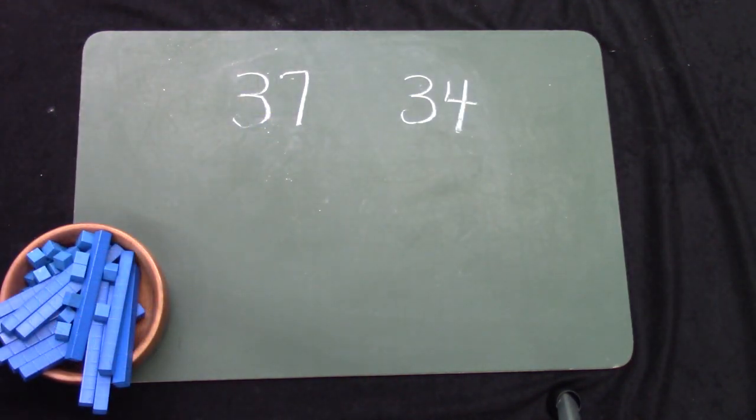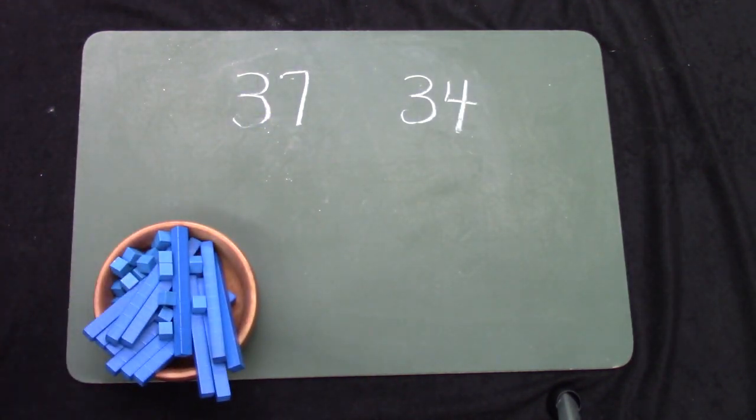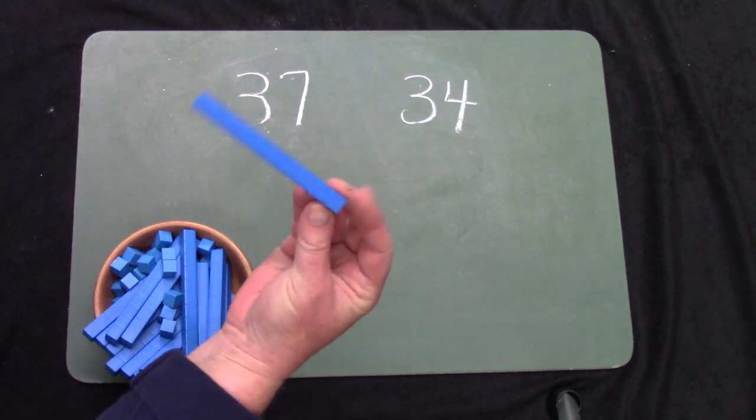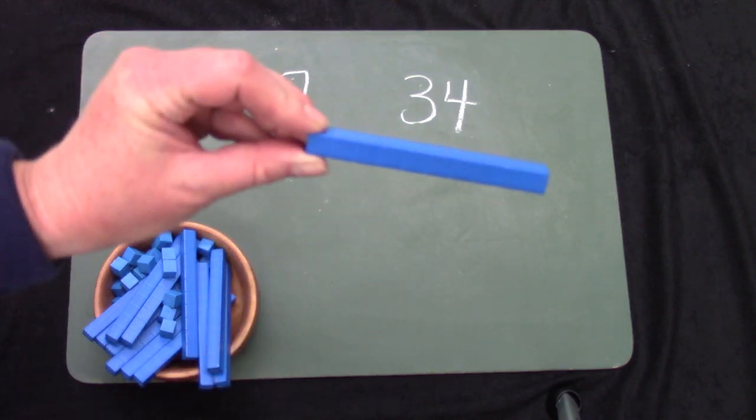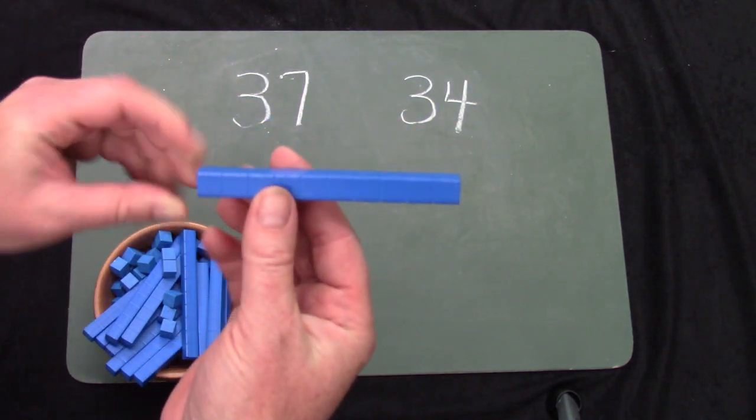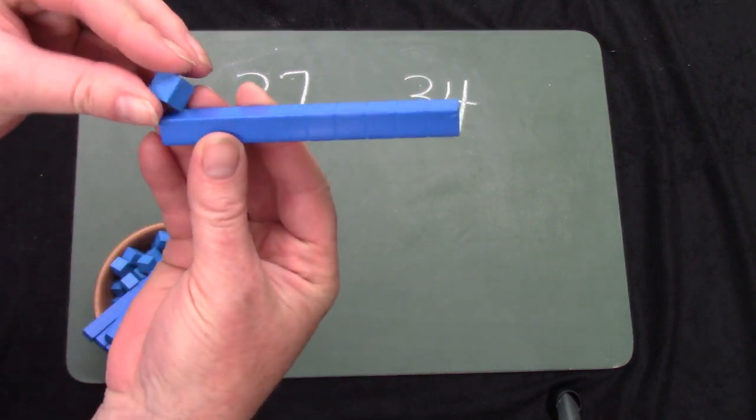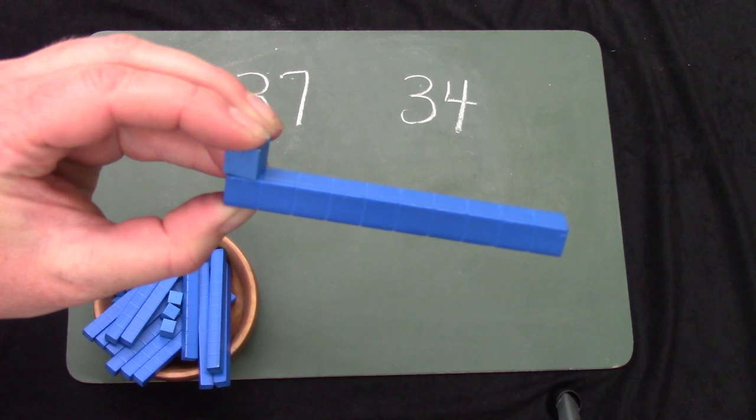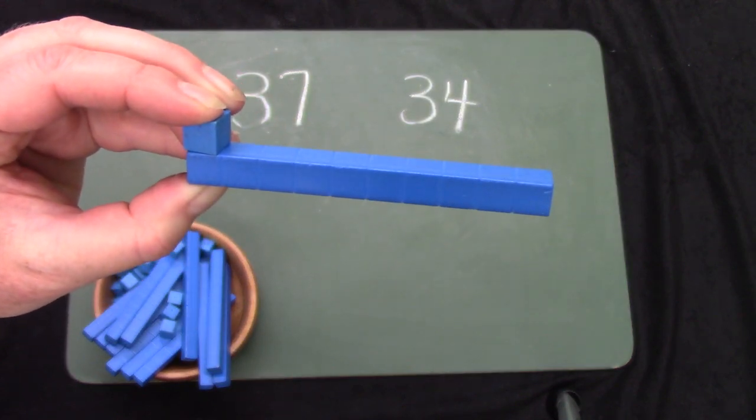Class, I would like for us to try the numbers 37 and 34. And I thought that these might be easier to use. This is a 10 rod. It is broken down into 10 little pieces. And these represent 1.